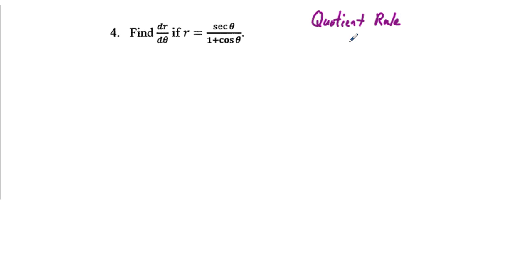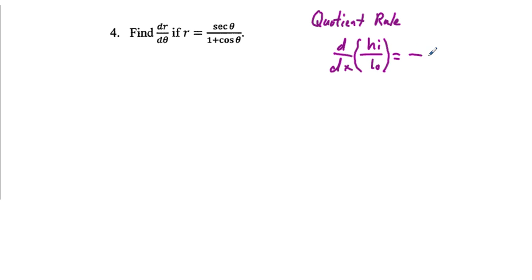The quotient rule states that d/dx of a high function divided by a low function equals low times the derivative of the high, minus high times the derivative of the low, all over low squared. A mnemonic: 'low d-high minus high d-low, all over low squared.' That's what we need to remember.